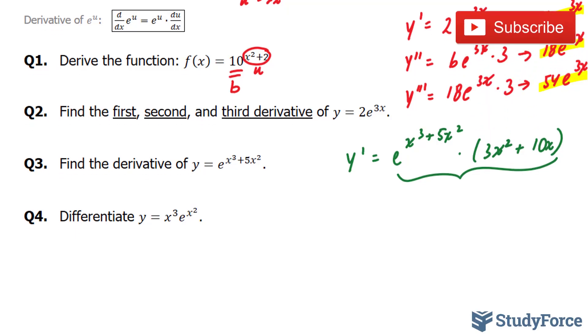Finally in question four they want us to differentiate x^3 times e^(x^2). For this you'll need to use the product rule.